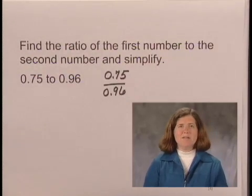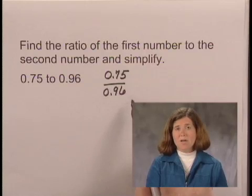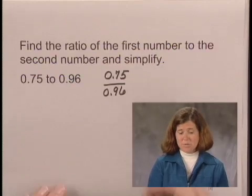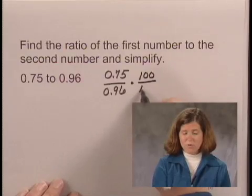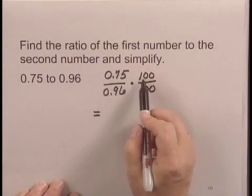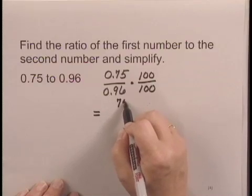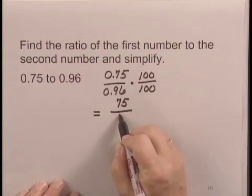In order to simplify this, we're going to multiply by 100 over 100 in order to clear the decimals. We multiply by 100 over 100, which is another form for 1. 0.75 times 100 is 75. 0.96 times 100 is 96.